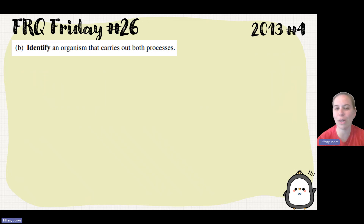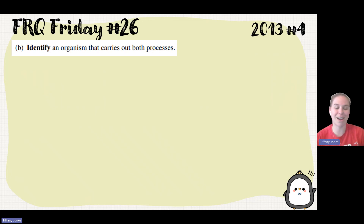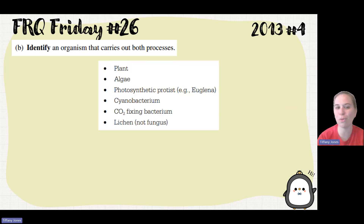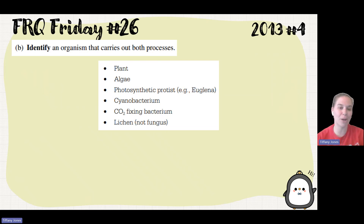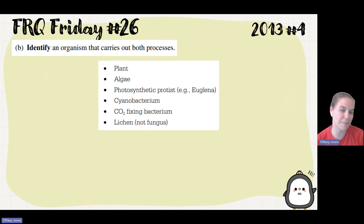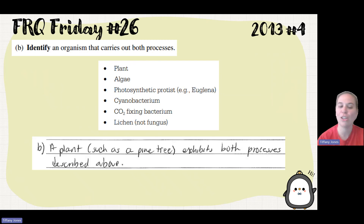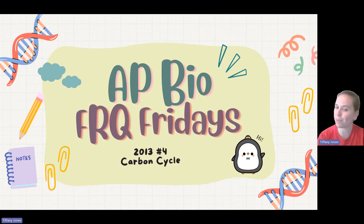Part B asks to identify an organism that carries out both processes. What has both a mitochondria and a chloroplast? A plant. There were multiple acceptable answers: algae, photosynthetic protists, cyanobacteria, which use their plasma membrane for the concentration gradient processes, carbon dioxide-fixing bacteria, or lichen. The student said a plant, such as a pine tree, exhibits both processes described above.